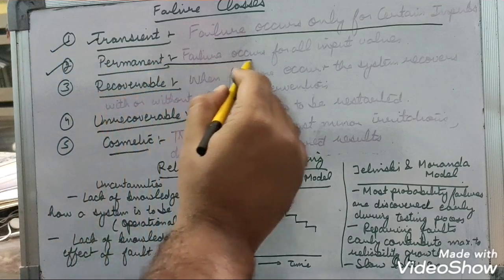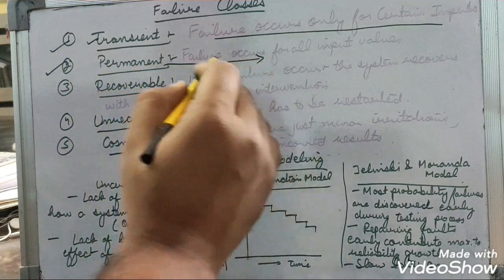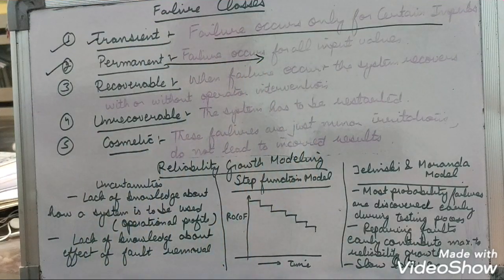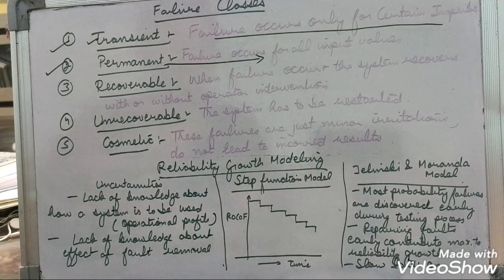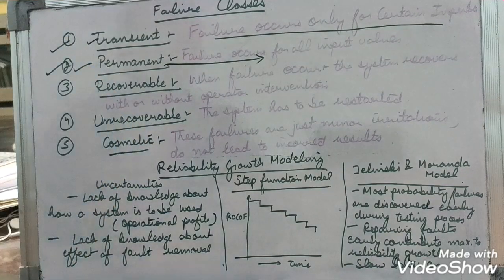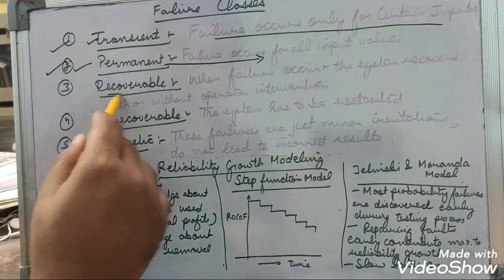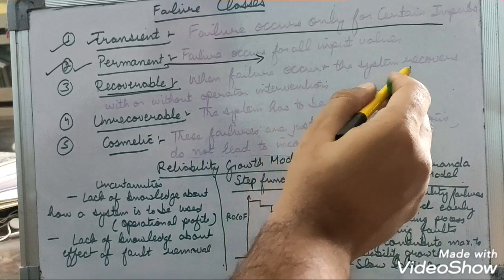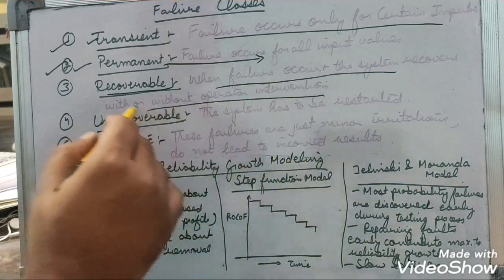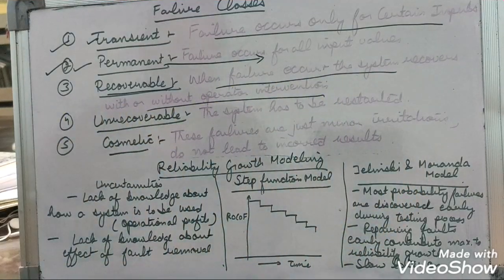Permanent failures are those which occur for all input values. Suppose there are many inputs and for all input values it results in a failure — that is known as a permanent failure. Then there are recoverable failures, where when a failure occurs the system recovers with or without operator intervention.